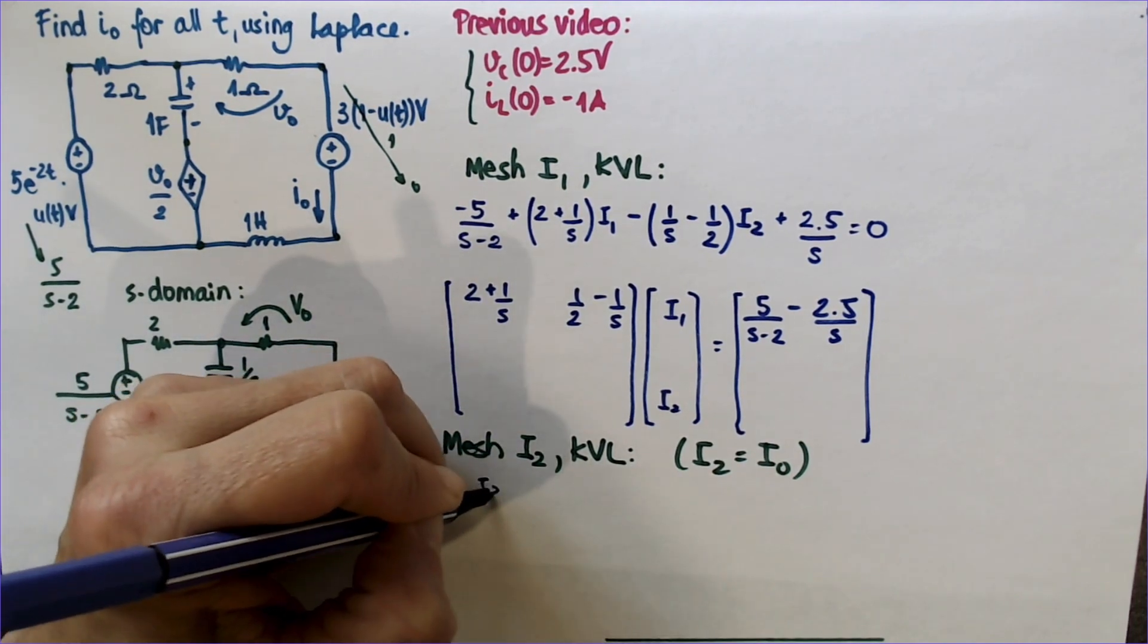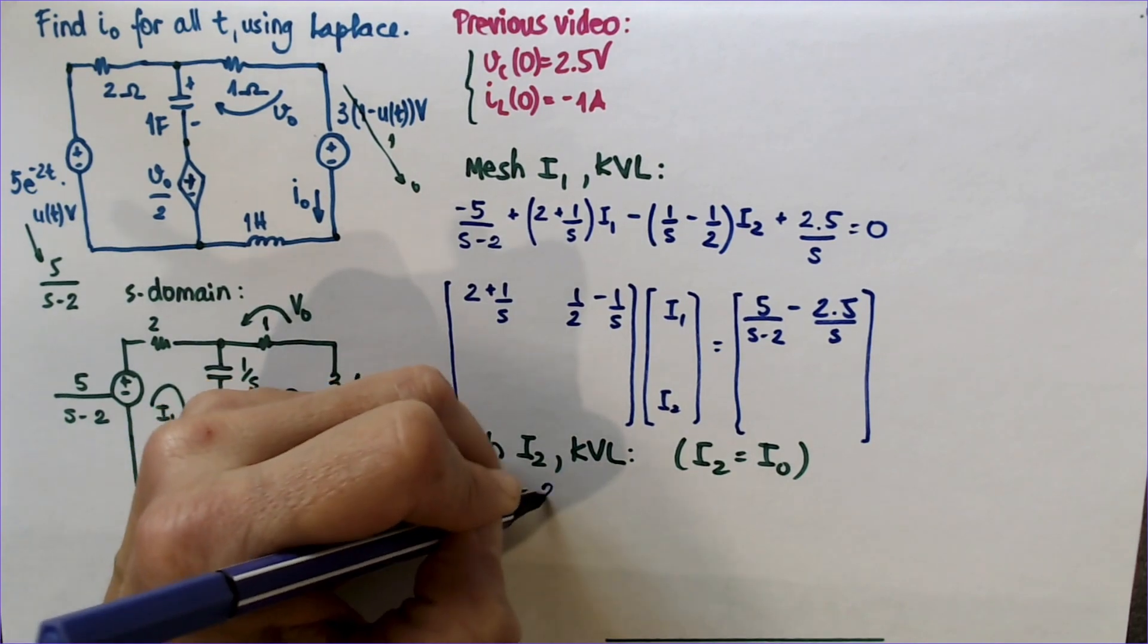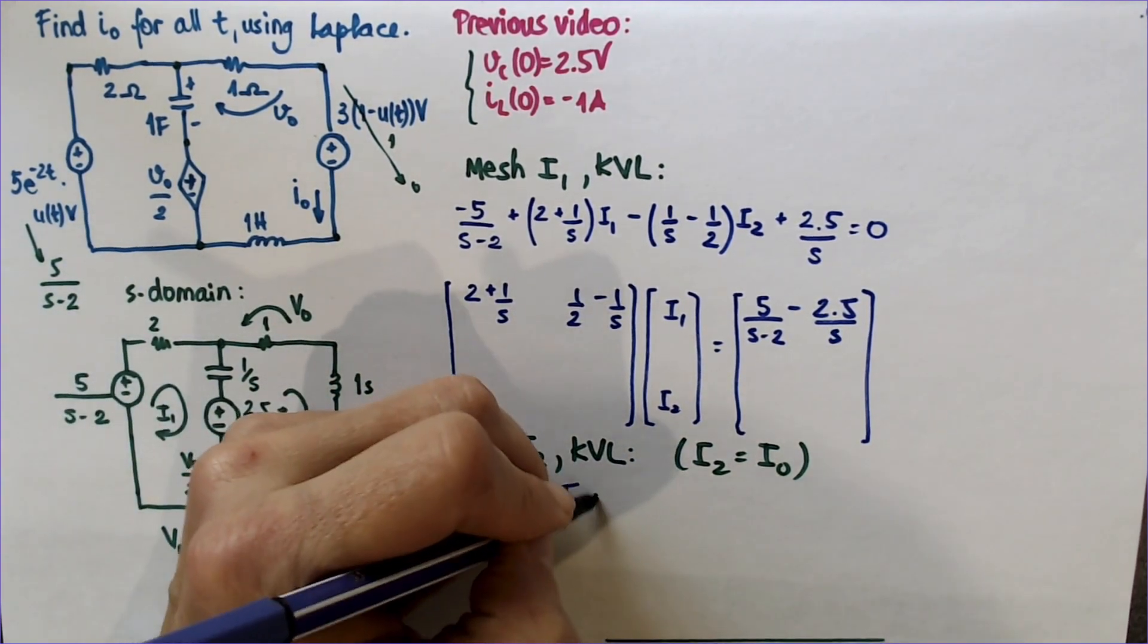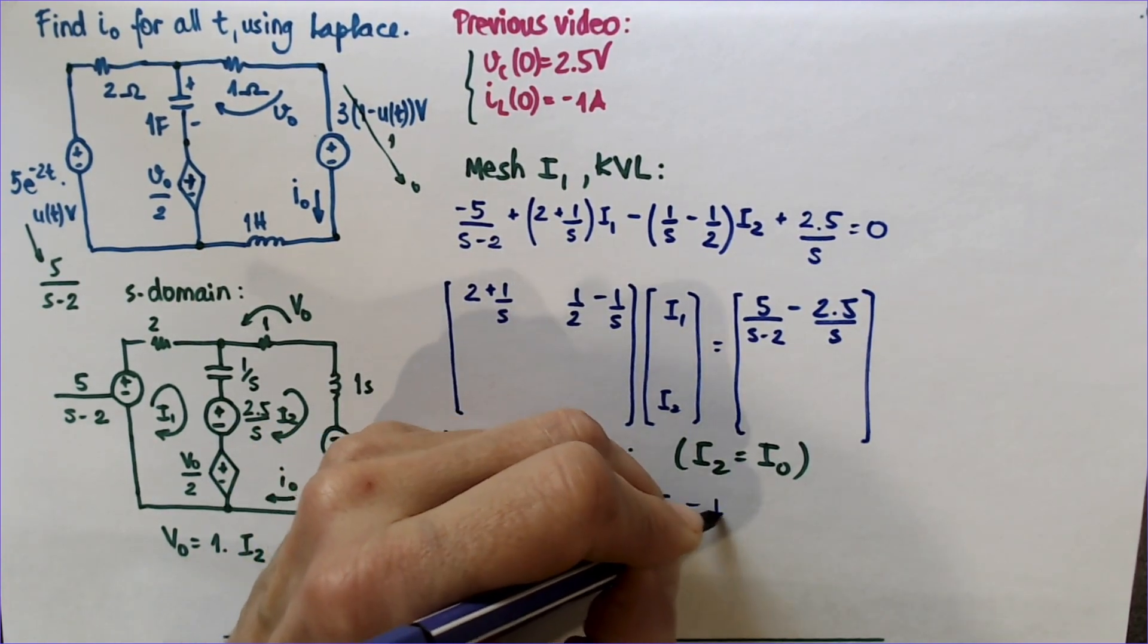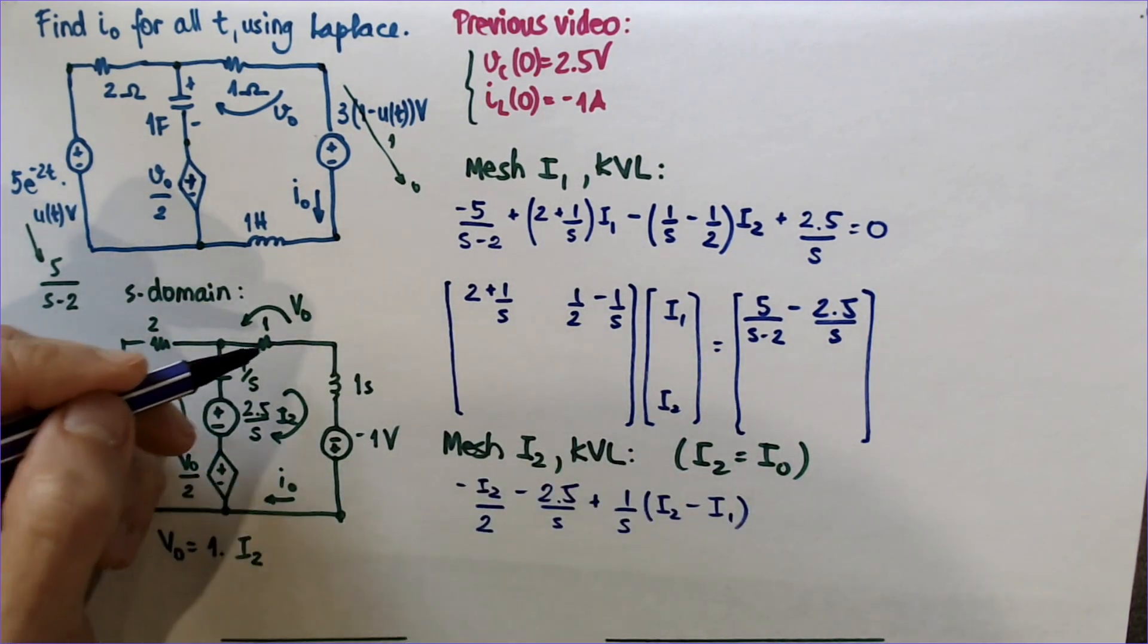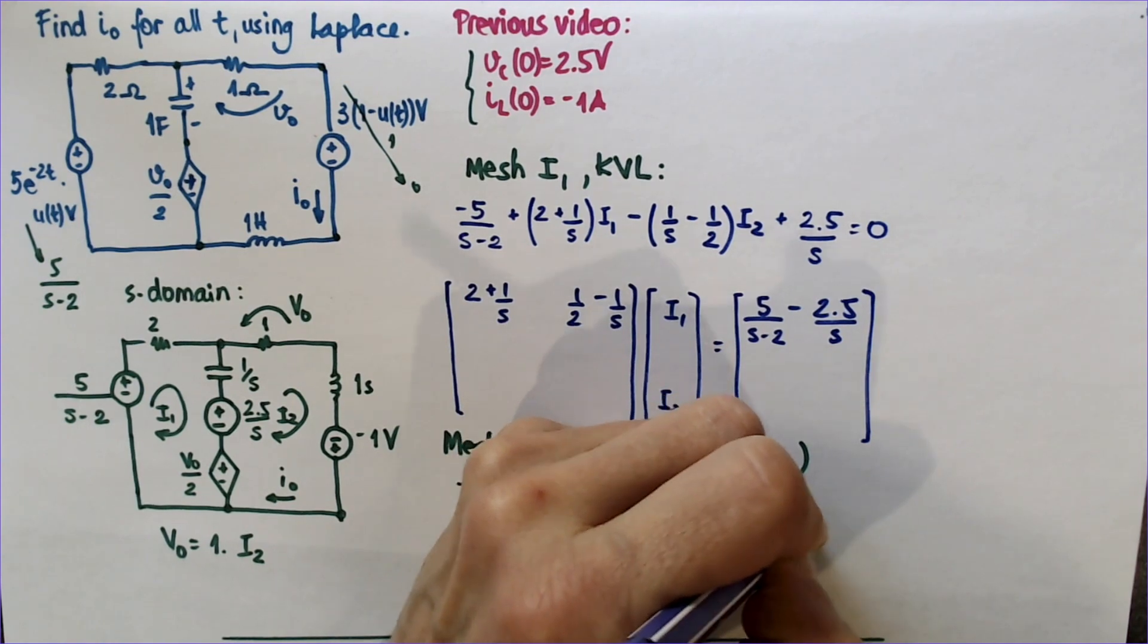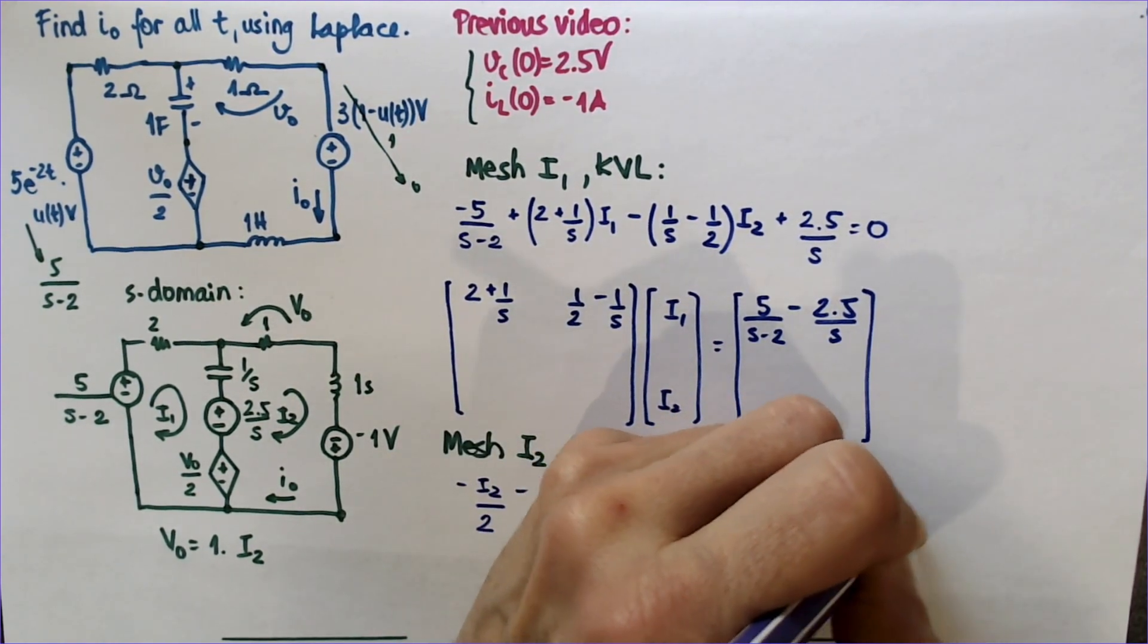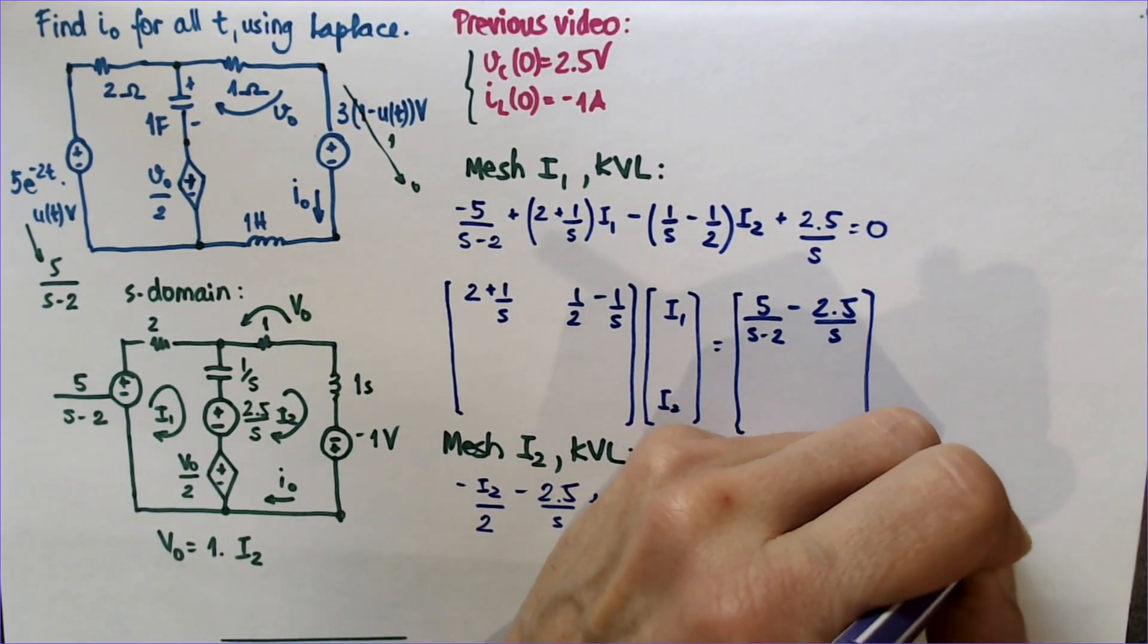Minus I2 over 2, minus 2.5 over s, plus 1 over s, I2 minus I1. I see it's going to take me longer here. Plus I2, I2 plus 1s, I2 plus 1 equals 0.